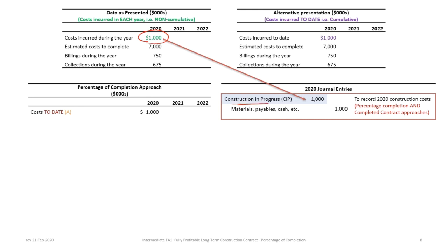The first journal entry is to debit Construction in Progress — a balance sheet account — for $1 million, and credit Materials, Payables, Cash, etc. for $1 million. This records the construction costs. We'll focus more on the journal entries and their impact on the income statement and balance sheet once we complete the gross profit calculation.